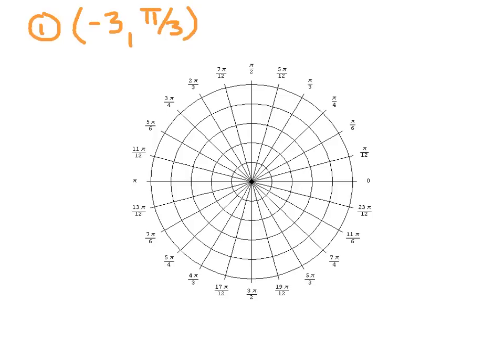Let's practice graphing where the r value or theta value is negative. When the r value is negative, instead of walking in the positive x-axis direction, I walk to the left three units, landing right about here. Then I rotate π/3 radians or 60 degrees, putting me at 4π/3. Alternatively, imagine you're at 3, rotate to π/3, then walk backwards three units on the same axis — you'll land in the same spot. You can do theta first and then r second, just as you could graph y values before x values on the Cartesian system.